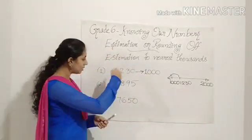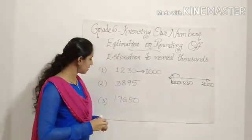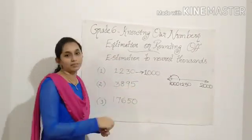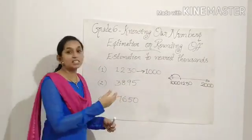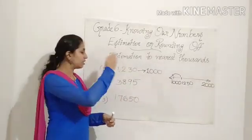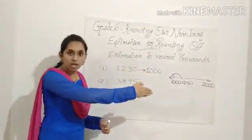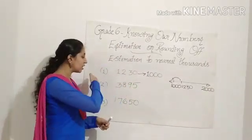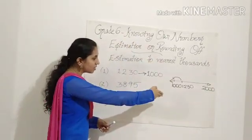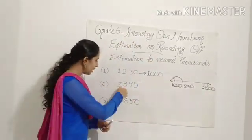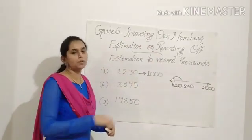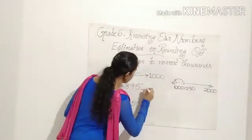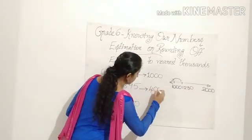The next question is 3,895. This number lies between which thousands? 3,895 lies between 3,000 and 4,000. Can you tell me — is it near to 3,000 or 4,000? It lies near to 4,000, so the answer is 4,000.